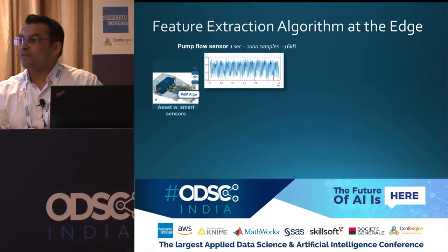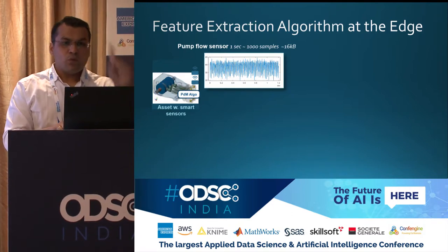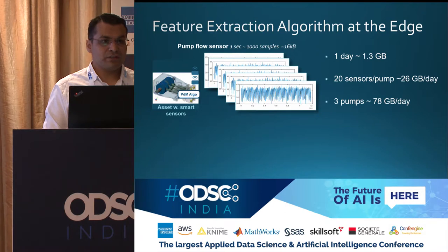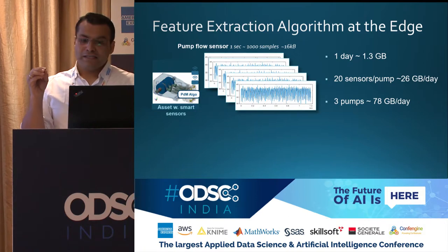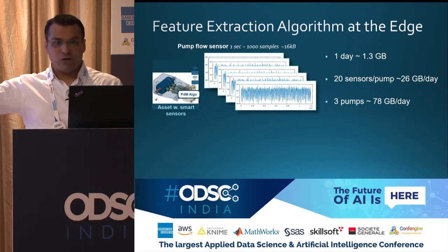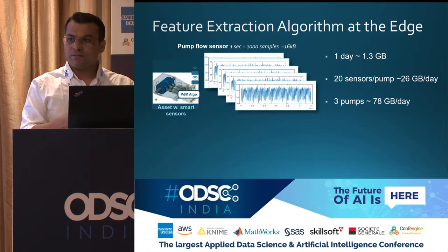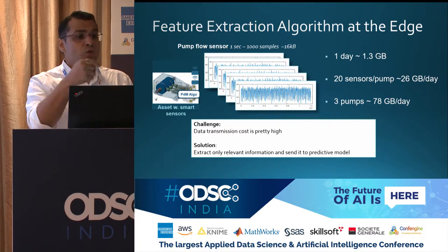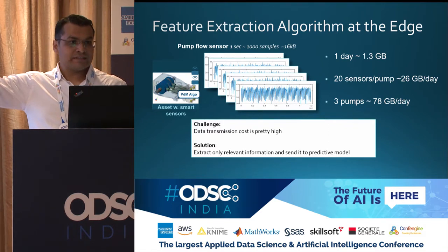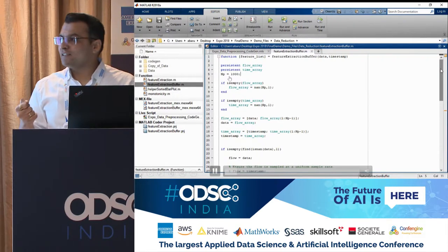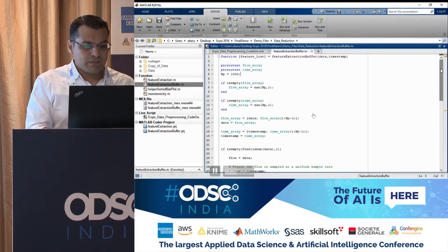Why is it important to take feature extraction directly on the edge? If this is a pump with one sensor taking measurements at every millisecond, I'll be getting 1000 samples which is 16 KB. If I do it for an entire day: 1.3 GB. If I have three pumps and 20 sensors, we'll be generating 78 GB of data. Does it make sense to send all the data unprocessed, pay a lot of money on transmission? You'll be checking bandwidth as well as cost. So on the edge itself, clean the data, extract what is useful, and send what can be consumed by your machine learning algorithm. I'm creating a buffer of 1000 samples — it doesn't make sense to take mean on every single point. Wait for 1000 samples, take a mean, and then extract those features.